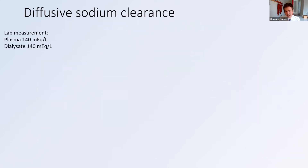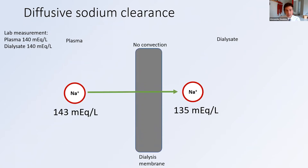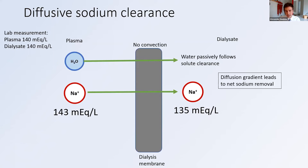Next I'm going to apply that to a dialysis setup. In the top left, the lab measurement would report a concentration of 140 and 140. What we've seen is that using the direct ion selective electrode will give you the sodium ion activity in plasma — and that's really going to give you a diffusion gradient of plasma toward dialysate. In this setup, water is going to passively follow with solute clearance in dialysis. But that's not the end of the story — there's another effect that plays a role here that's going to change these numbers somewhat. The diffusion gradient here would lead to net sodium removal.